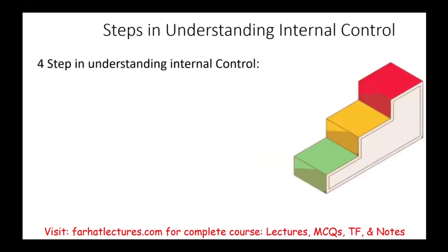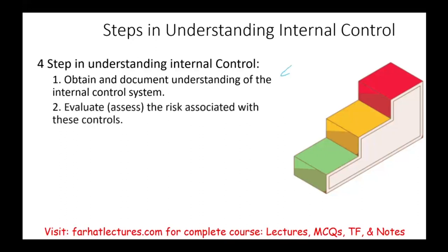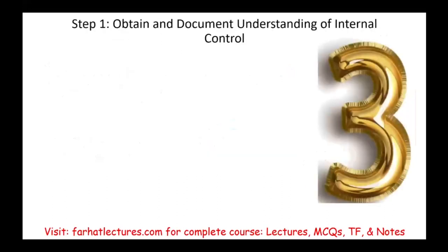There are four steps in understanding internal control. First, obtain and document an understanding of the internal control system. Second, assess the risk associated with this control. Third, assess the control design, execute, and test of the control. Fourth, decide on planned substantive risk and substantive testing. In this session, we are focusing on step one, which involves three sub-steps.